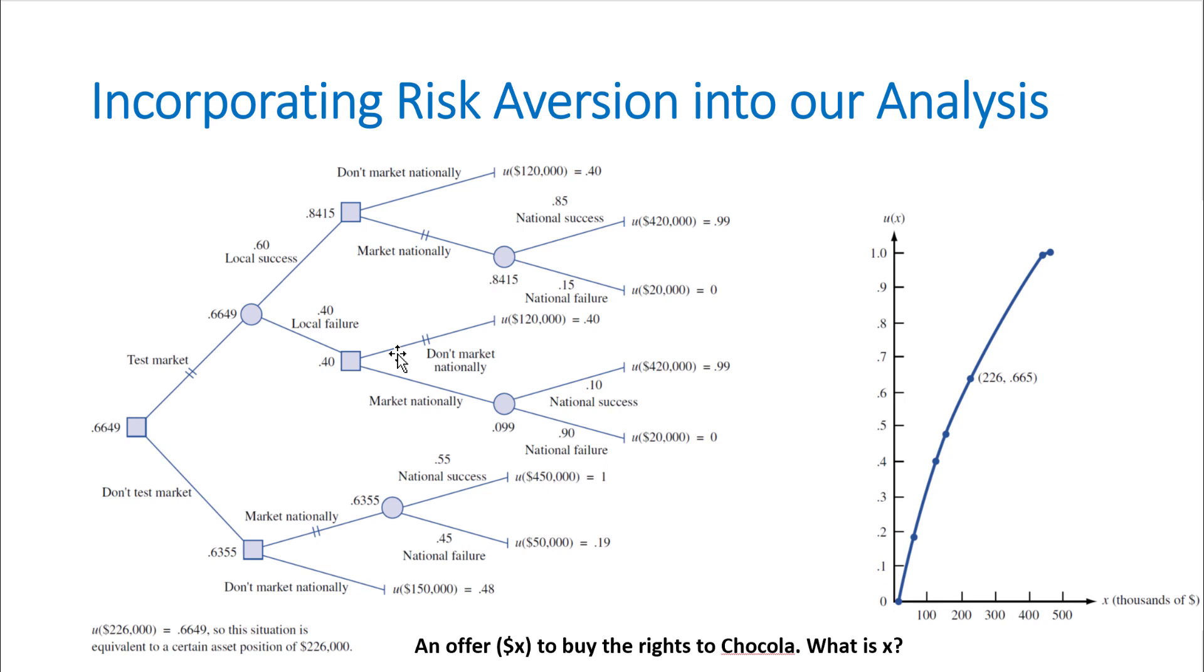Another important or interesting point here is that we just realized that the entire utility of this decision tree is 0.6649. So what was this whole decision tree about? It was about national marketing and in general, marketing of a new product which was called Chocoodle.